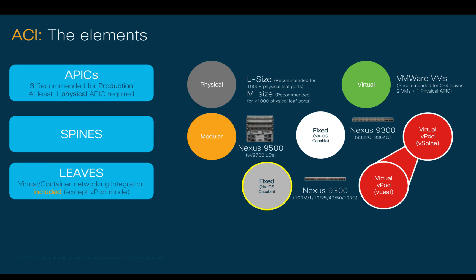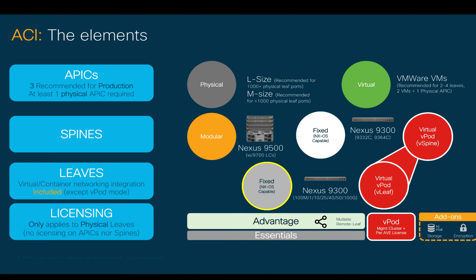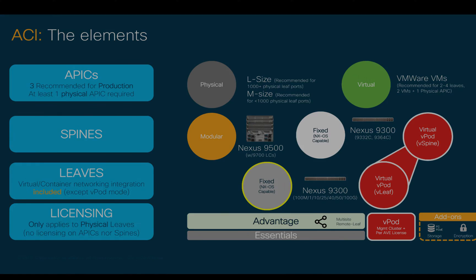ACI includes the central management of not only physical, but also virtual and container networking from the APIC at no additional cost. This takes us to the types of licenses. Currently, we have essentials and advantage. There are other licenses you may want to take into consideration, especially if running special features like BPOD, storage protocols, or encryption, which we will cover in other sections.